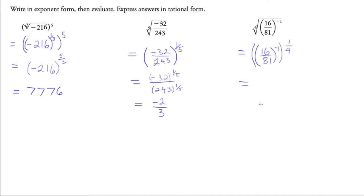And we have choice now. We can multiply our power to a power and have a negative one-quarter and try to deal with that, or we can deal with the negative one exponent and reciprocate first, which is what I'm going to do. So we've got 81 over 16 to the quarter, or to the fourth root. And so we've got 3 over 2.